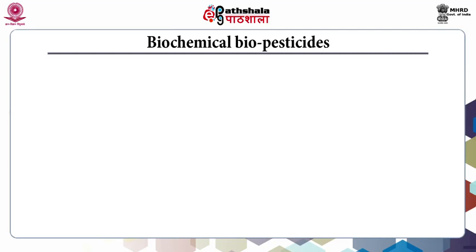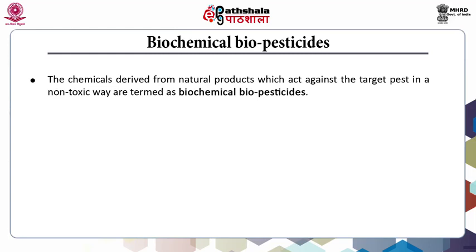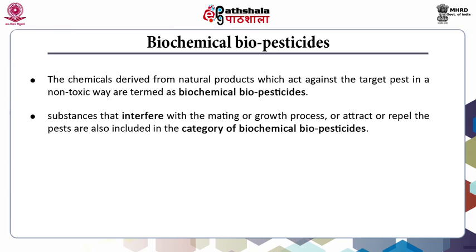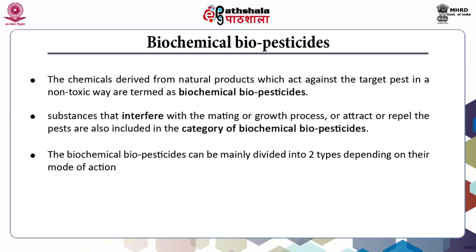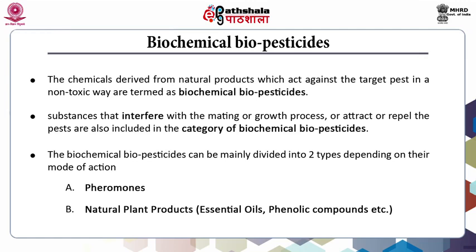The next set of biopesticides includes biochemical biopesticides. The chemicals derived from natural products that act against the target pest in a non-toxic way are termed biochemical biopesticides. Substances that interfere with mating or growth processes, or attract or repel pests, are also included in this category. Biochemical biopesticides are further divided into two categories: pheromones, and natural plant products including essential oils and phenolic compounds.